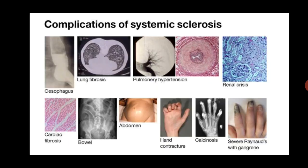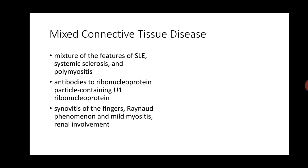Systemic sclerosis patients can have many complications. In the esophagus there is loss of lower esophageal sphincter tone, decreased motility and Barrett esophagus with gastroesophageal reflux. There can be fibrosis of the lung and pulmonary hypertension. Renal crisis occurs due to intimal deposition of glycoproteins leading to malignant hypertension. In the heart there can be cardiac fibrosis. Bowel can show obstructions due to irregular fibrosis. Contractures in the hand can occur, and extensive calcium deposition can occur in and around the joints — calcinosis. Severe Raynaud's phenomenon can lead to prolonged occlusion and ischemic necrosis of the distal fingers, known as gangrene.